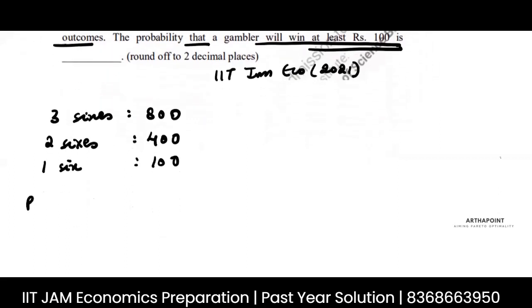So I want to find out the probability that the gambler wins 100 or more than that, which means the probability that he earns 100 plus the probability that he earns 400 plus the probability that he earns 800.